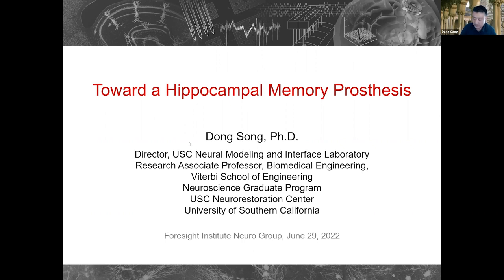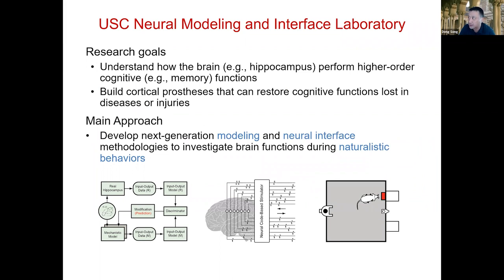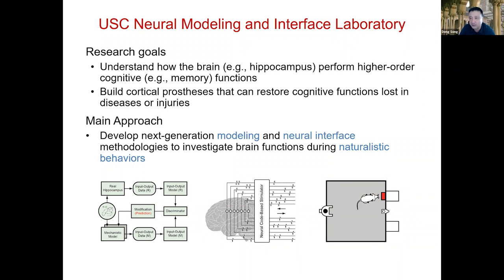It's still in very early stage, but I will talk about the modeling and the interface technology we have developed to support the prosthesis. I'm the director of USC Neuro Modeling and Interface Lab. Our main research goal — we have two goals actually. One is understanding the brain, answering basic neuroscience questions such as how memory functions form in the hippocampus. The second is more of an engineering goal: we try to build cortical prostheses that can restore cognitive functions lost in diseases or injuries.